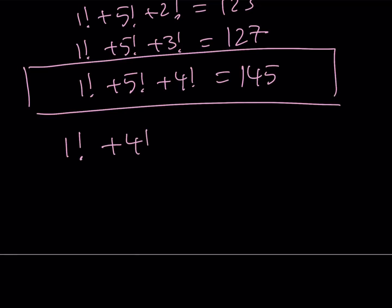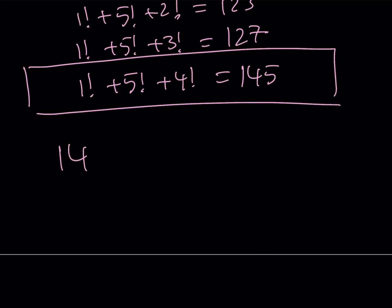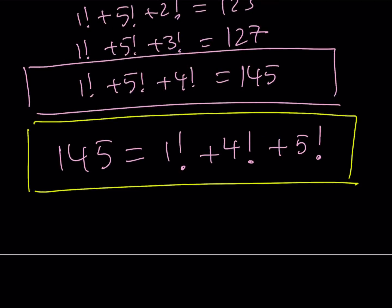We can write it clearly: 145 is equal to 1 factorial plus 4 factorial plus 5 factorial. Is that the only solution? And the answer is yes. This is the only solution because we looked at pretty much all the cases, and the only case that works is digits 1, 4, and 5.